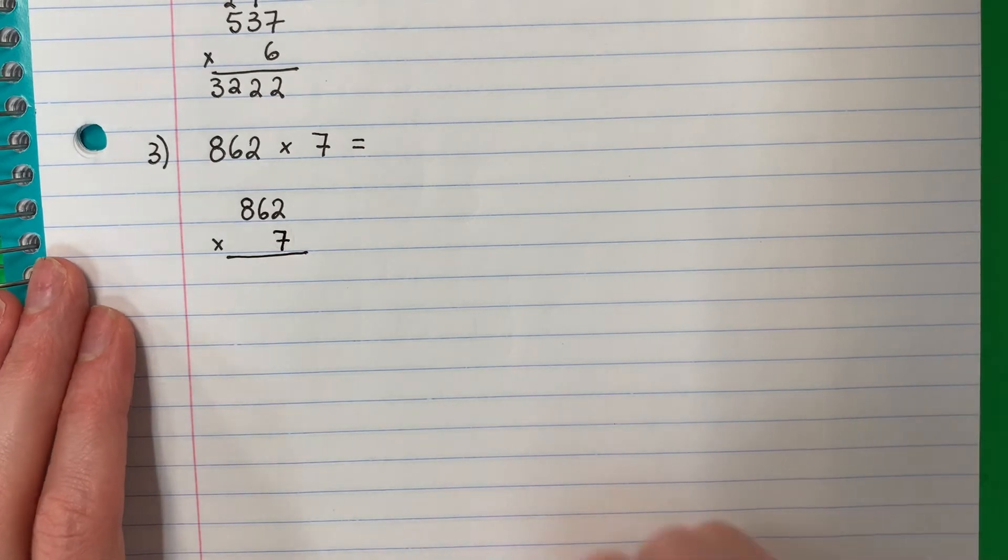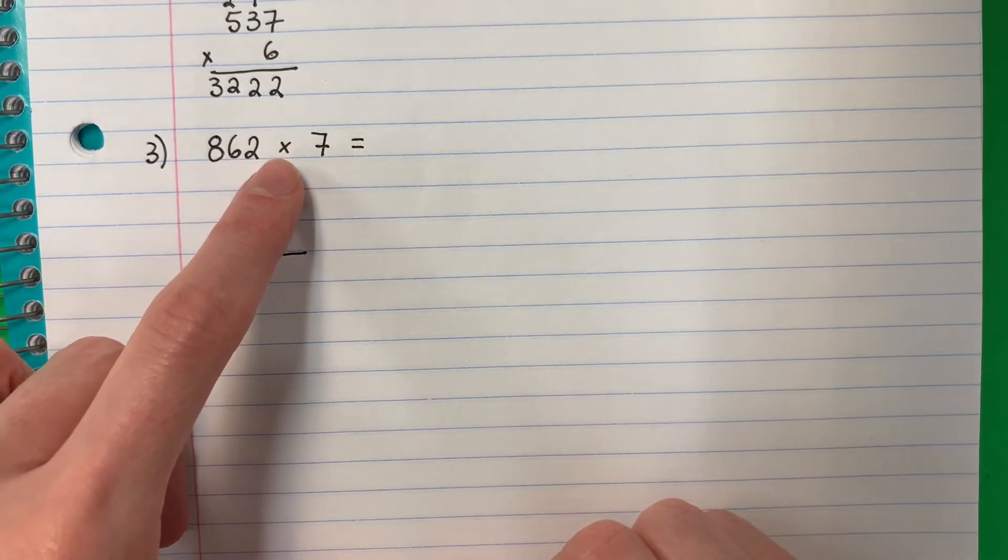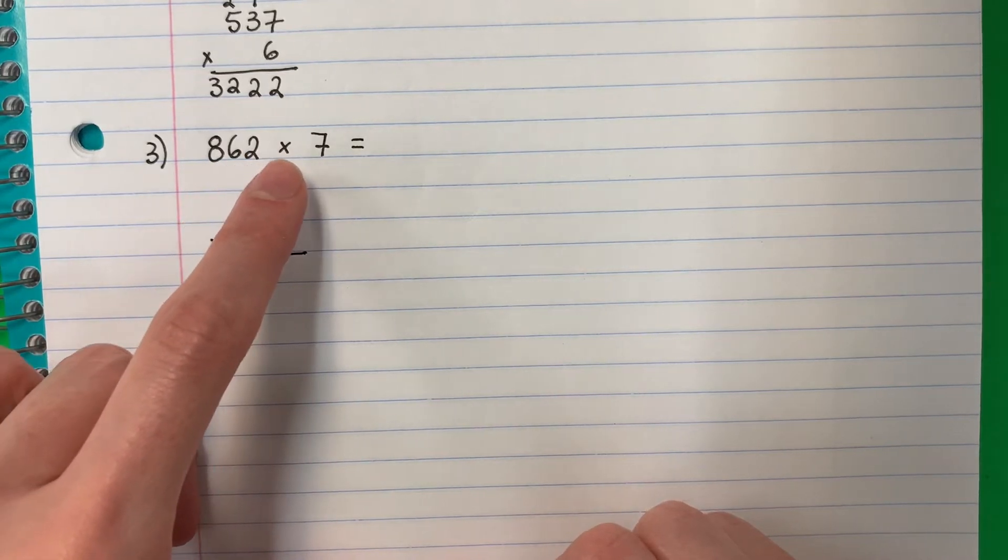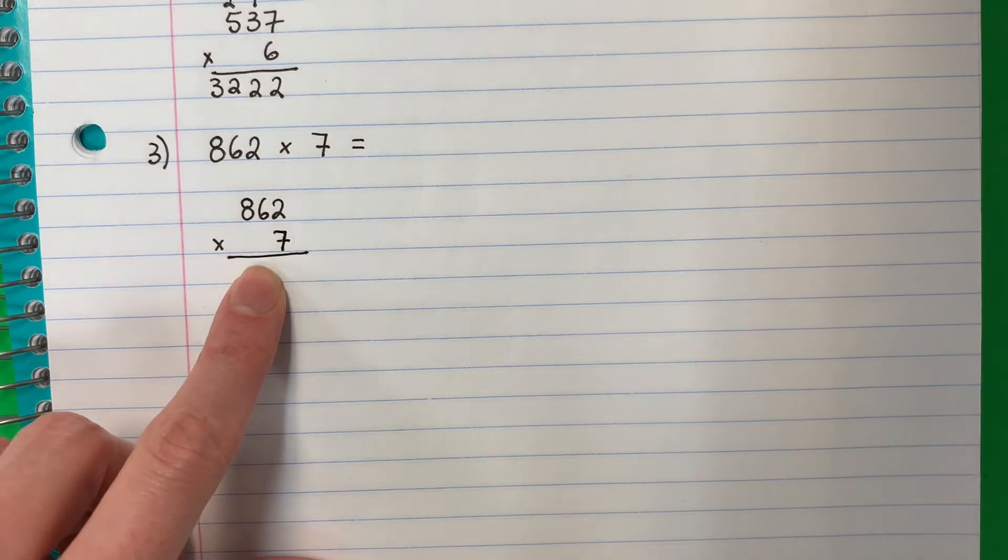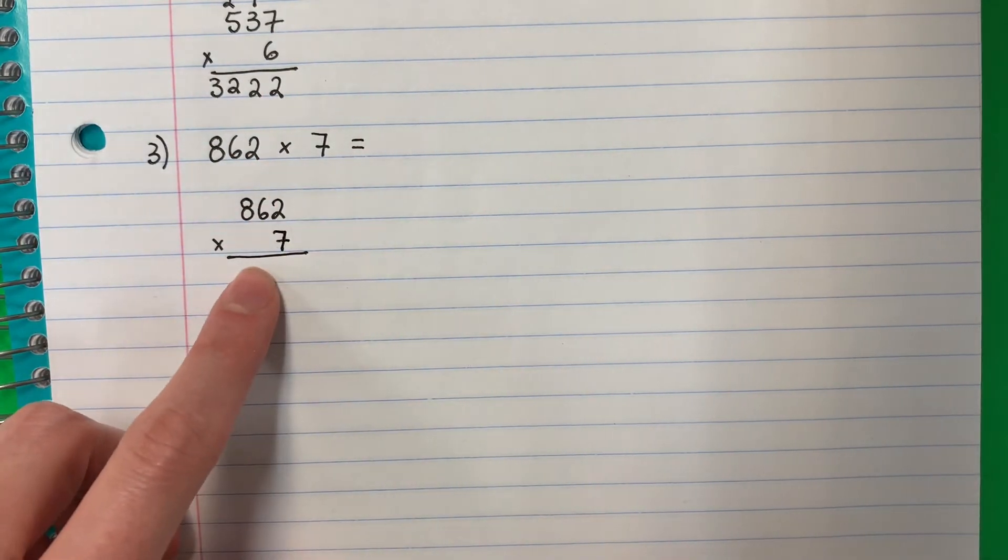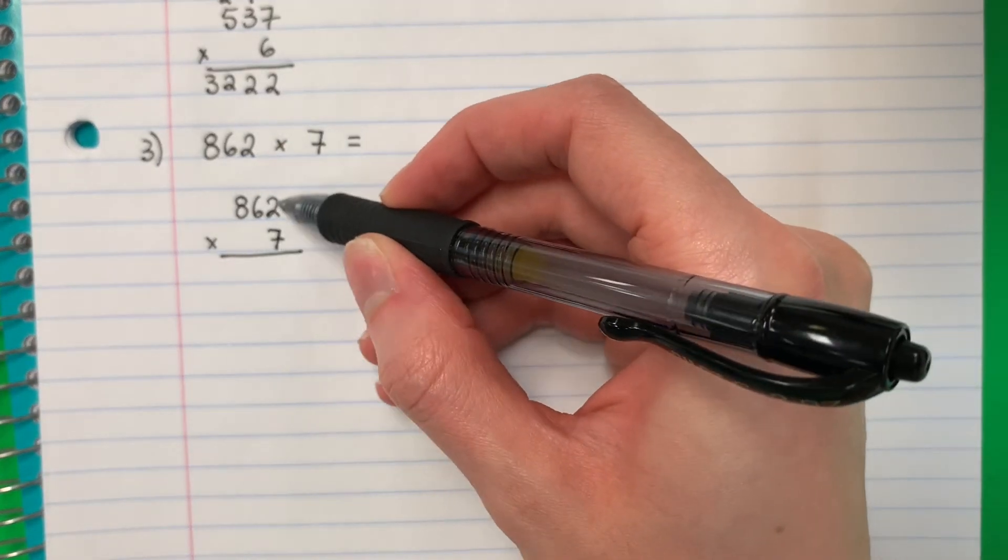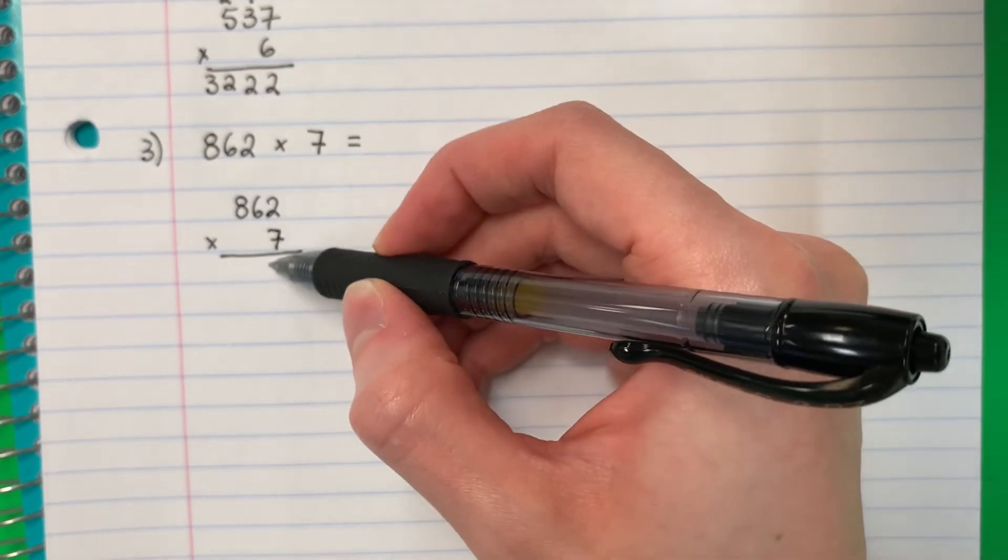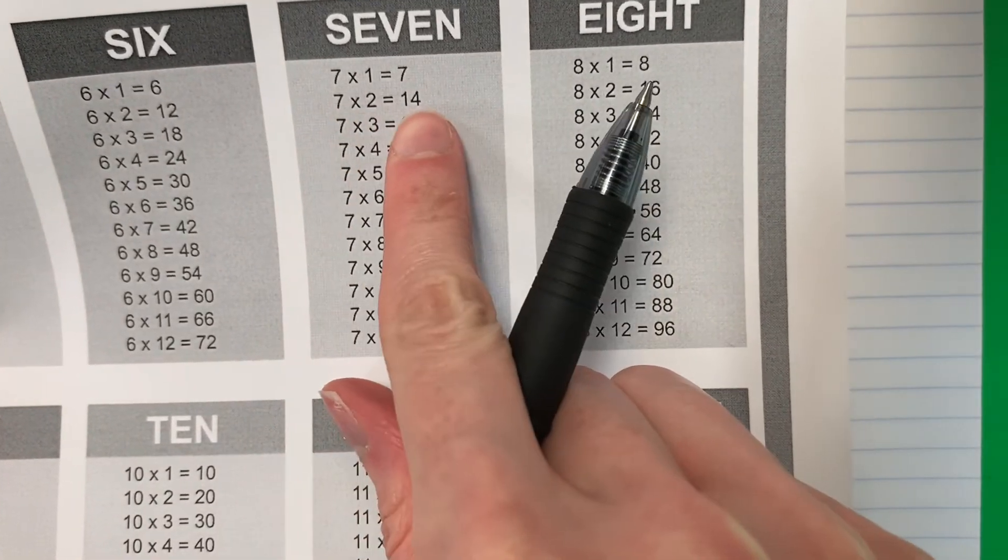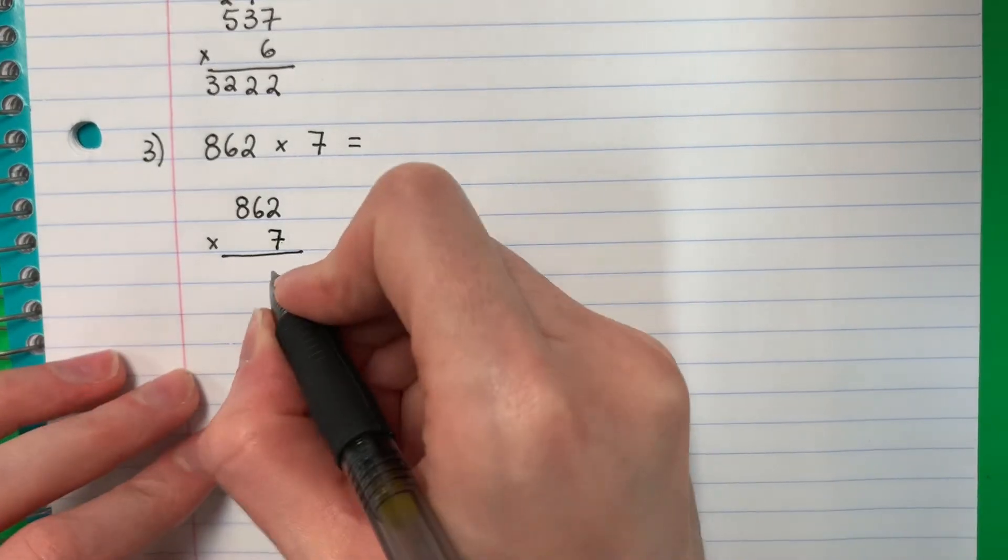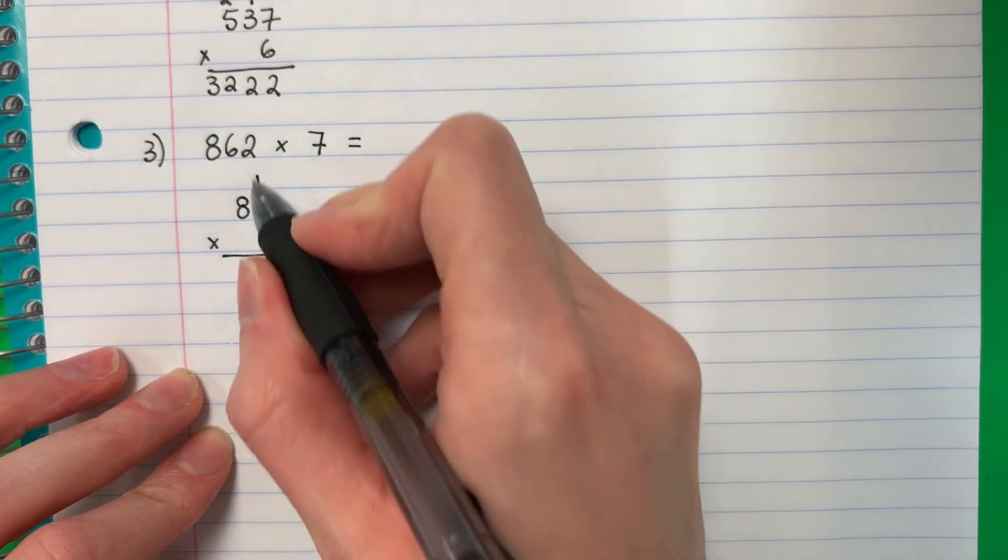Now it's time for example three. Here's my question. Eight hundred sixty-two times seven. Ochocientos sesenta y dos por siete. And I need to rewrite it in this form. Y tengo que escribir otra vez, pero en esta forma. So let's go ahead and start. First, it's seven times two. Siete por dos. So let's go ahead and find the seven. Seven times two. Siete por dos. Fourteen. Catorce. So you put the four here and the one here. El cuatro aquí. Y el uno allí.